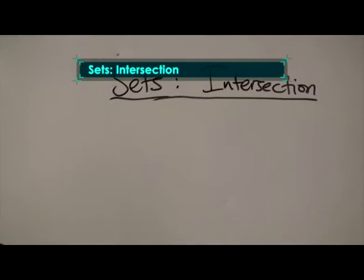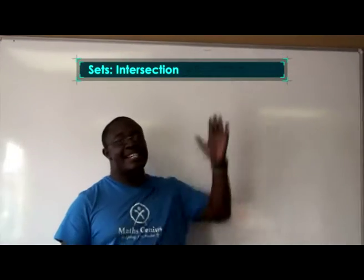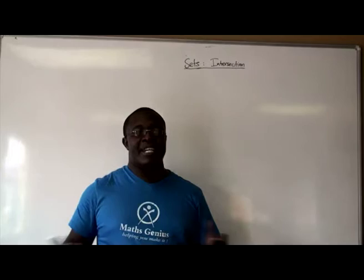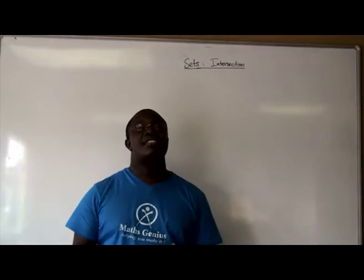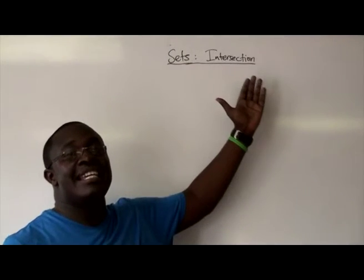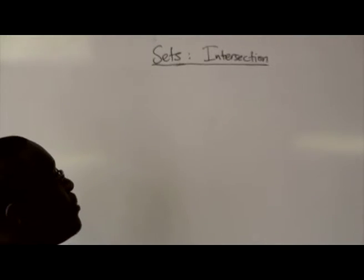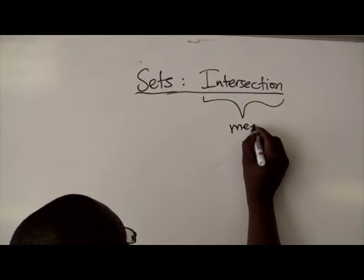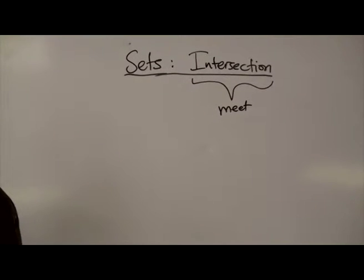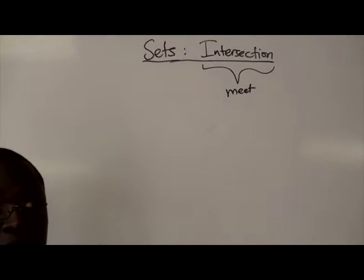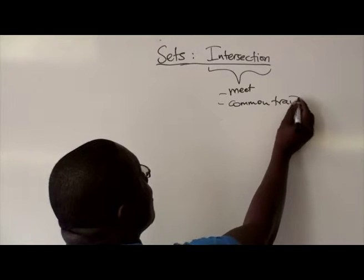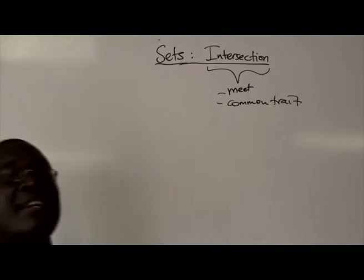Today we're going to be talking about sets, but looking at the concept of intersection. So before we go into the symbology and the mathematical application of intersection, let us try and understand what the word itself means. What are the synonyms of intersection? In English, to intersect is to meet. Or if you say two roads have an intersection, that intersection is the part of the road that is common to both roads. So you're thinking of a common trait. To meet or to have something in common.